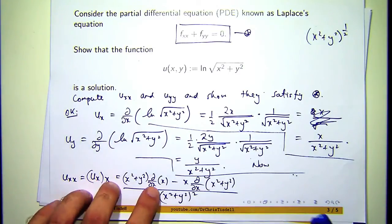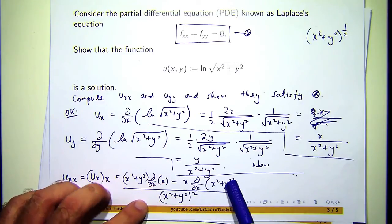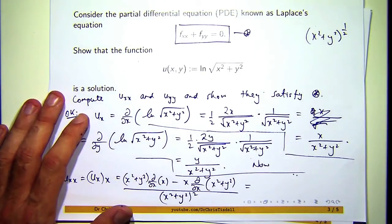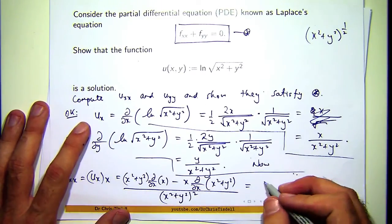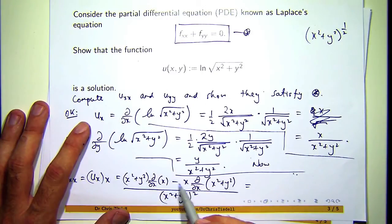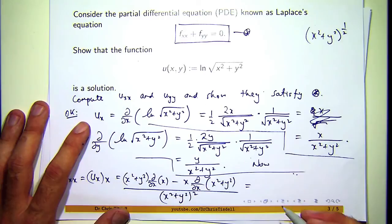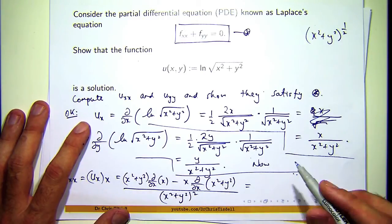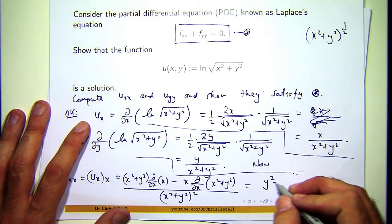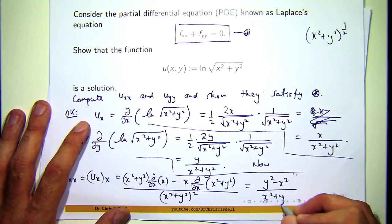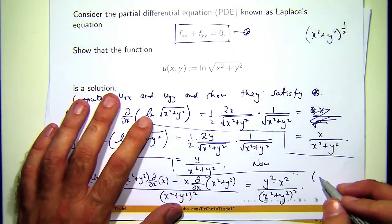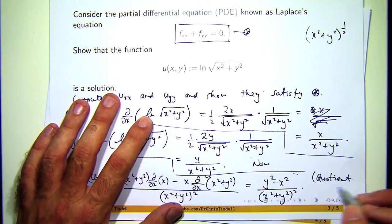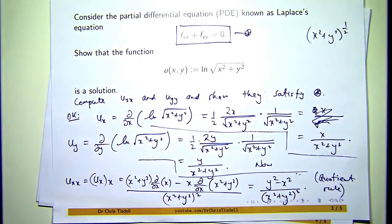So if I go through and compute d/dx of x, I get 1. d/dx of x squared plus y squared, that's 2x. So then if I simplify the top, what am I going to get? I'm going to get x squared plus y squared minus 2x squared. So I'm going to get a y squared minus x squared. So that's just the quotient rule. So we've got one of these derivatives.